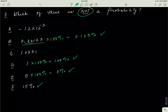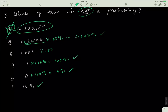Now checking the remaining options: A is a negative number, and probabilities cannot be negative. The lowest probability is 0%, so A is not a valid probability. C, when multiplied by 100%, gives 103.31% — that exceeds the maximum of 100%, so C is also not a valid probability. Therefore, A and C are not probabilities; all the others are.